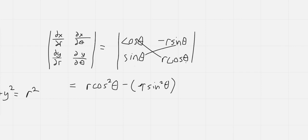Because the determinant of a two by two matrix is the product of these entries minus the product of these entries. We notice that this negative and this negative cancel out and we can factor out an r. And we get r times cosine squared plus sine squared which is just one. So the Jacobian is r.